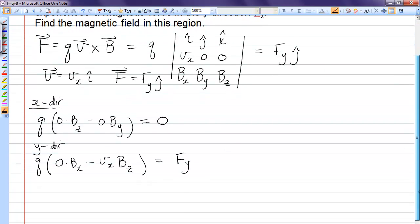This does give us some information. Although Bx could be anything, because anything times 0 is still 0, we see that this gives us Bz. Bz must be negative Fy divided by Q Vx. So we know the magnetic field has a component in the z direction, and it's in the negative z direction.